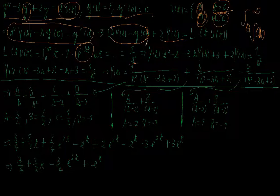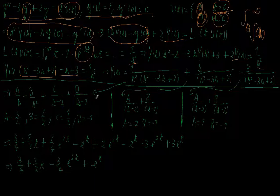Plugging in the initial conditions and rearranging, I get Y(s) times (s squared minus 3s plus 2) minus s plus 3 equals 1 over s squared. So Y(s) equals 1 over (s squared times (s squared minus 3s plus 2)) plus s over (s squared minus 3s plus 2) minus 3 over (s squared minus 3s plus 2).